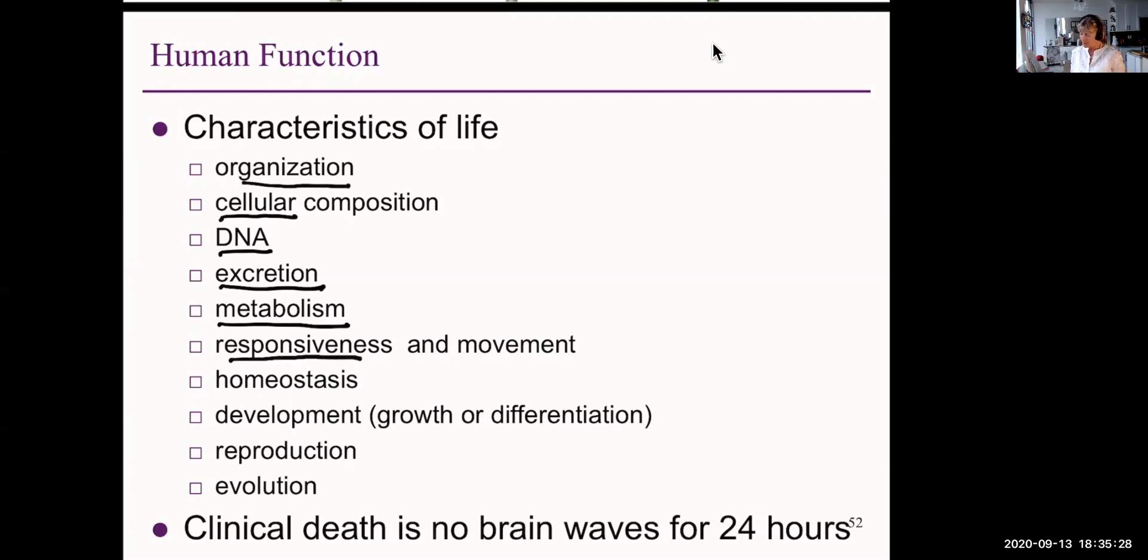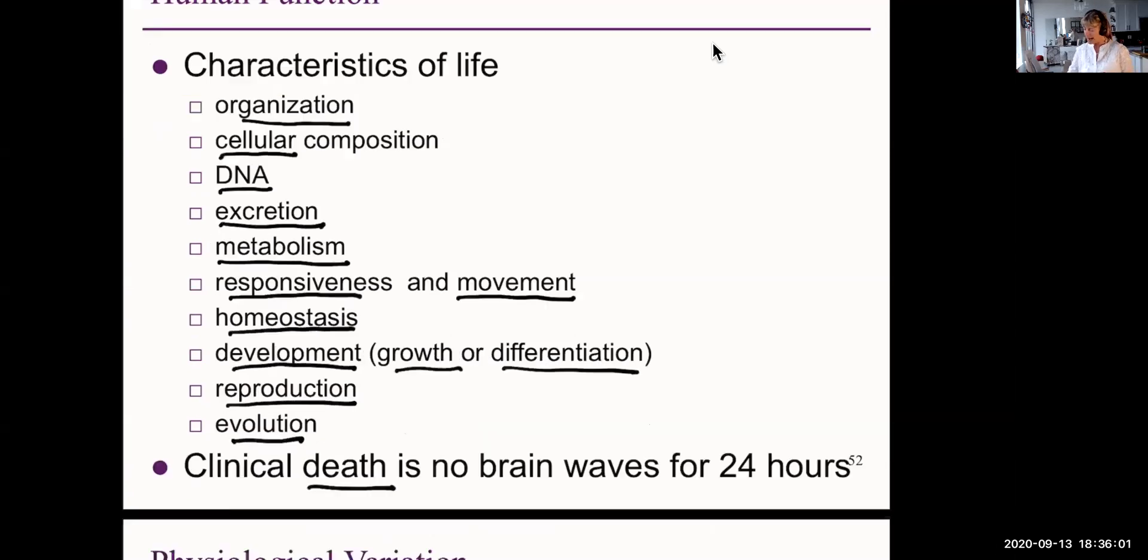All life forms respond to the environment and can move at at least one stage of their life. All life exhibits homeostasis. In other words, keeping a stable environment. All life develops, grows, and differentiates into different functions. All life reproduces, makes copies of itself. That's because of the DNA. All life evolves. Death of a human is considered when there has been no brainwaves for 24 hours.